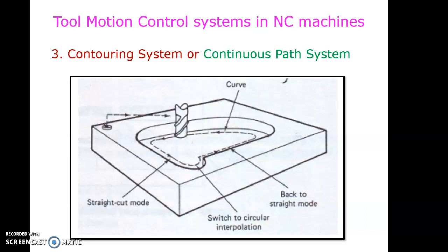The major difference between each type of tool motion control system relates again to circuitry. The circuitry and accuracy for the contouring system is the most complex, while the previous systems are simpler. For example, if you are running a drilling machine, you can install a point-to-point system — lower cost, sufficient for the operation. But for a milling machine requiring all operations, you must install the contouring system, as it involves longitudinal, transverse, and depth direction movement of the tool.